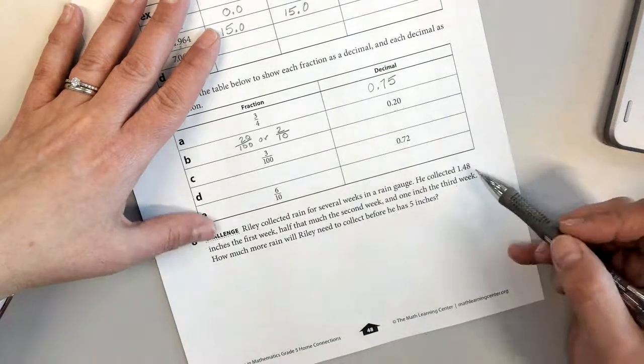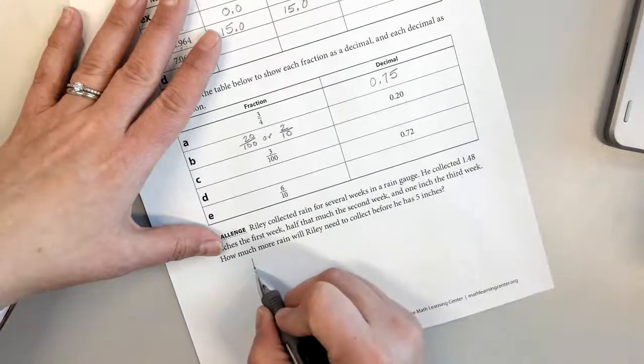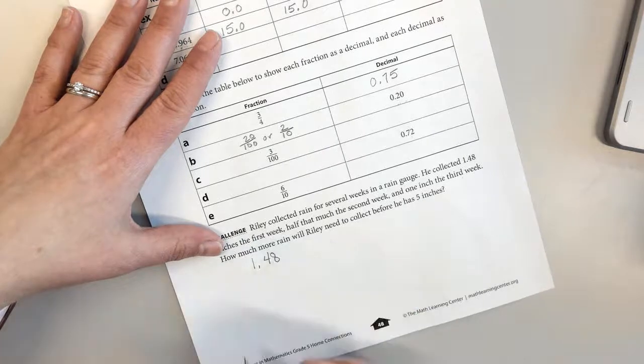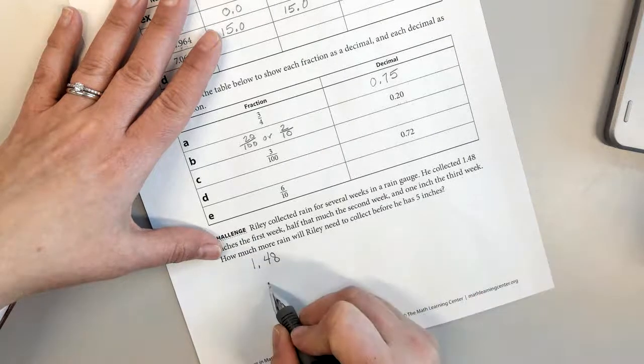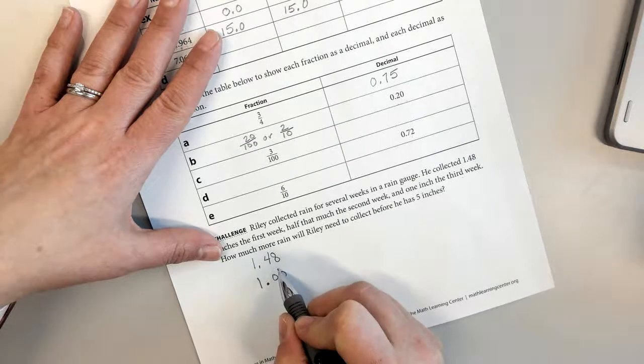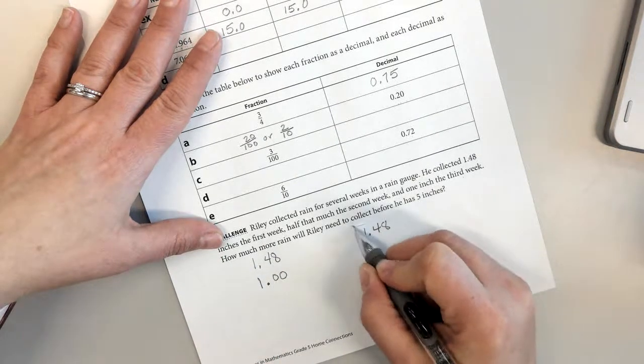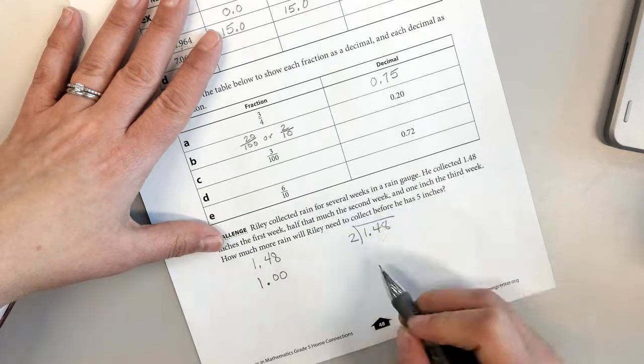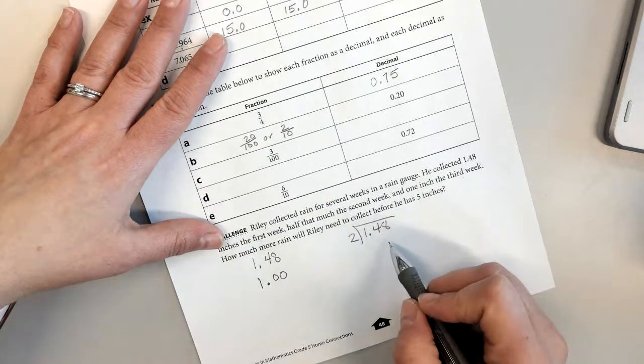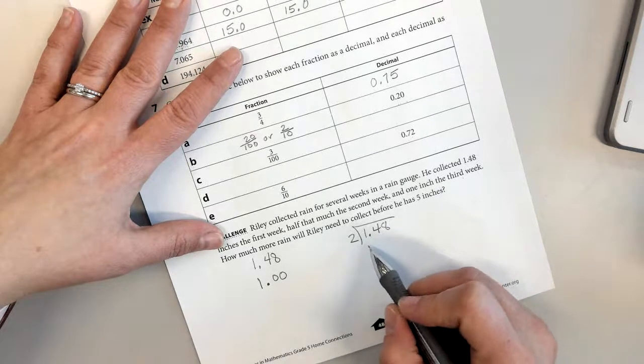So what we need to do is figure out how much he got the second week, first of all, because we've got one and forty-eight-hundredths the first week, and the third week he got one inch. Now we need to figure out what goes in the middle. So I have to divide one and forty-eight-hundredths by two. Now if you don't know how to do long division, just think about it, cutting it in half. But I'm going to write it out long division style.